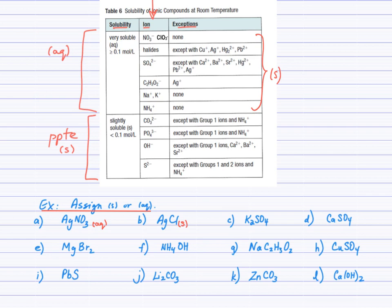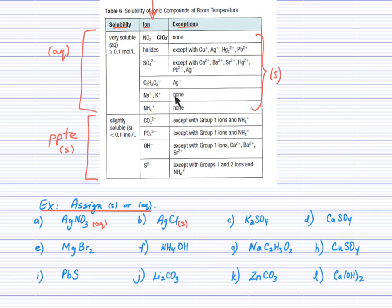Potassium sulfate: looking down the ion column for sulfate, sulfates in the top half of the table are typically aqueous. Potassium is not listed as an exception for sulfate. In fact, the only place potassium appears is where it says any compound with sodium or potassium ions will always be aqueous — no exceptions. So as soon as you see nitrate, or potassium or sodium up front, you can write aqueous.